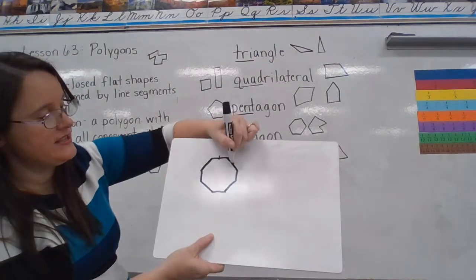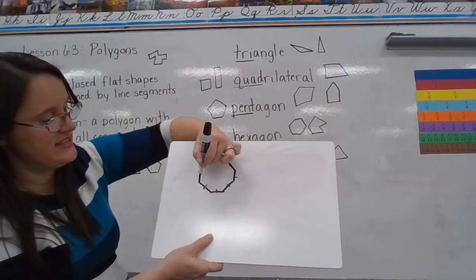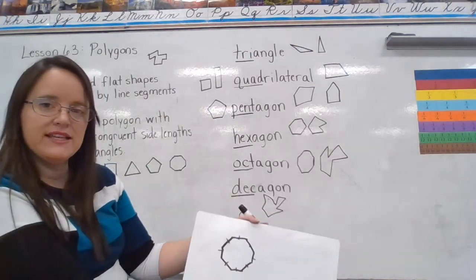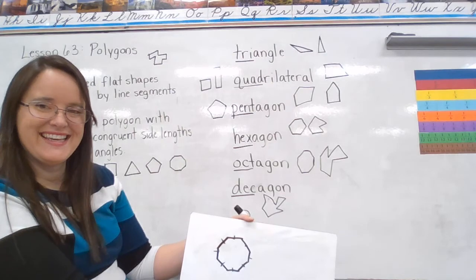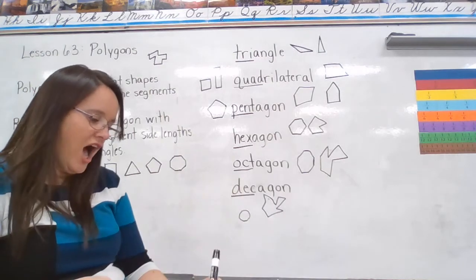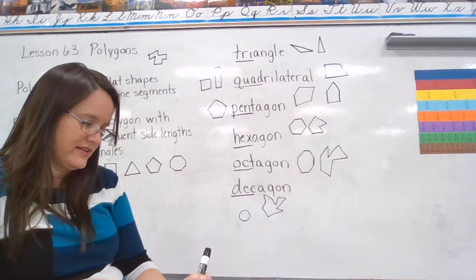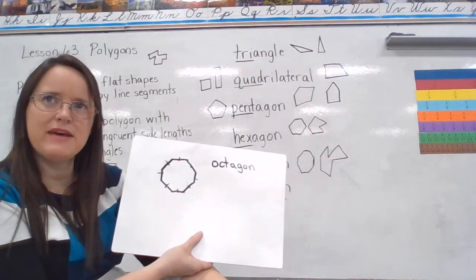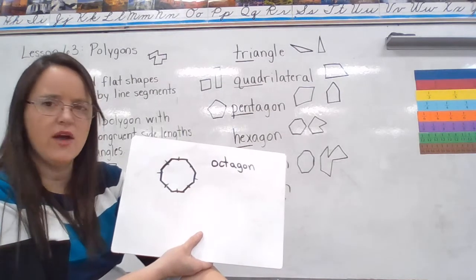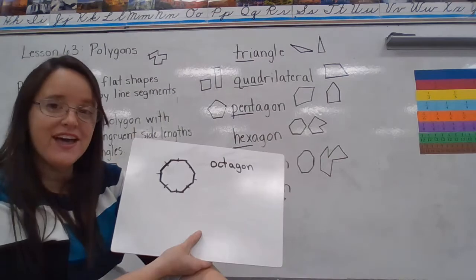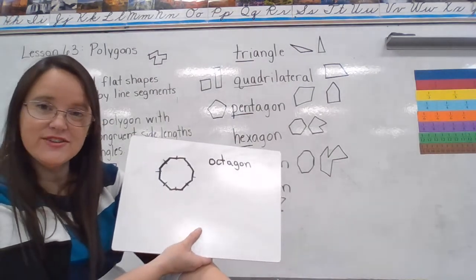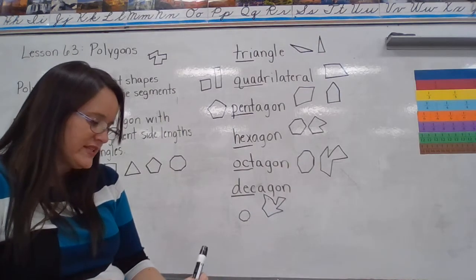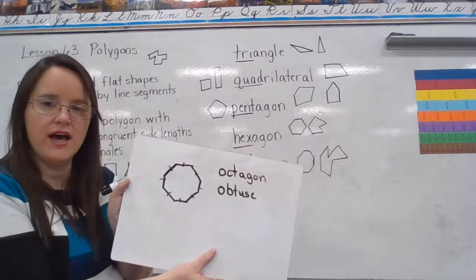Count the sides: one, two, three, four, five, six, seven, eight sides. What is a polygon with eight sides? If you said octagon, you are absolutely correct. And what do we notice about these angles? They're not right angles, and they're not acute little tiny angles — they're big, fat obtuse angles.